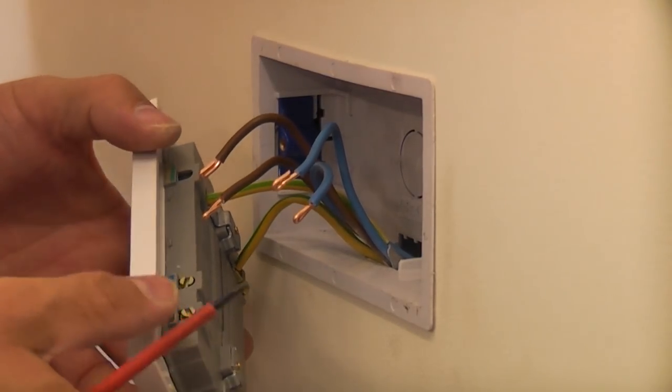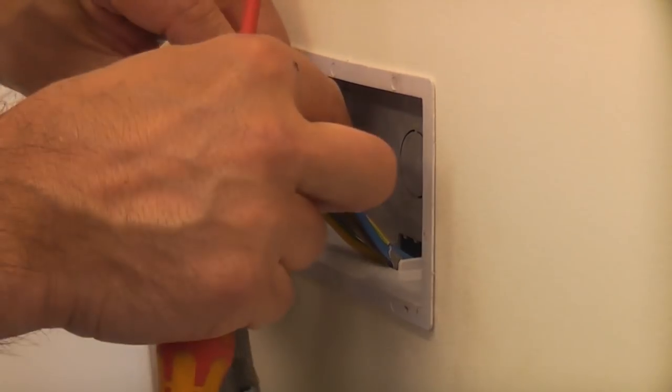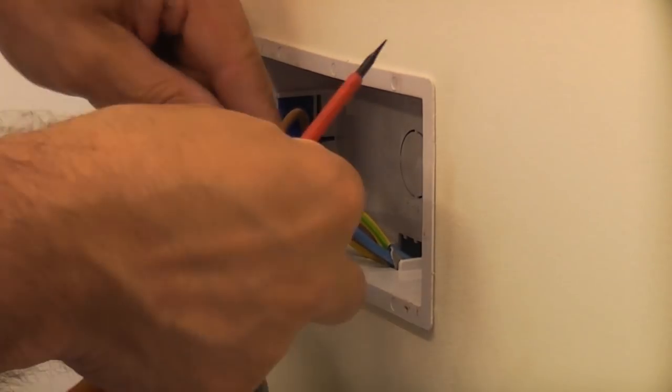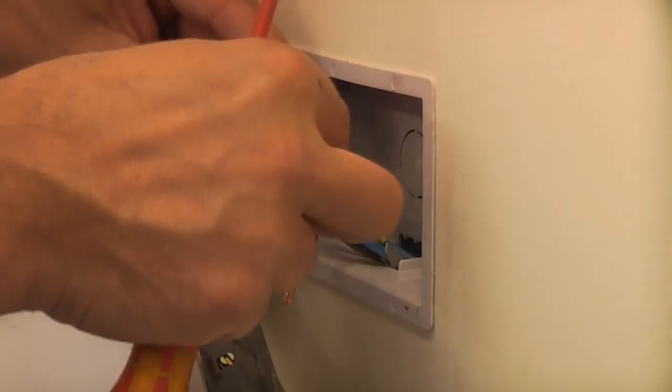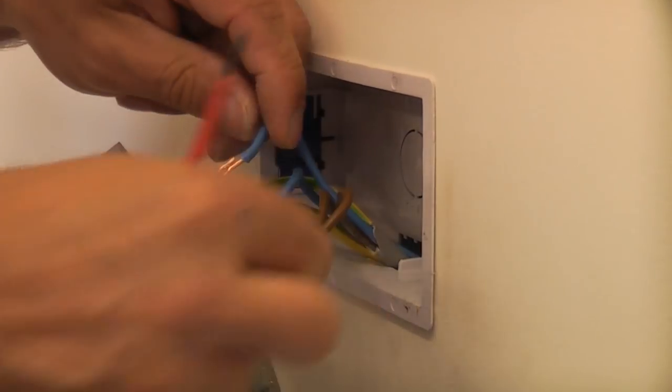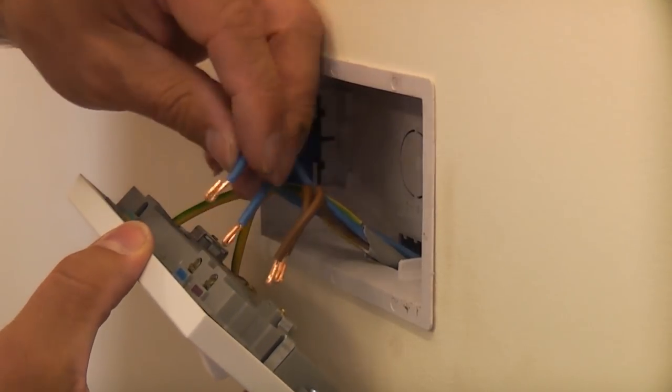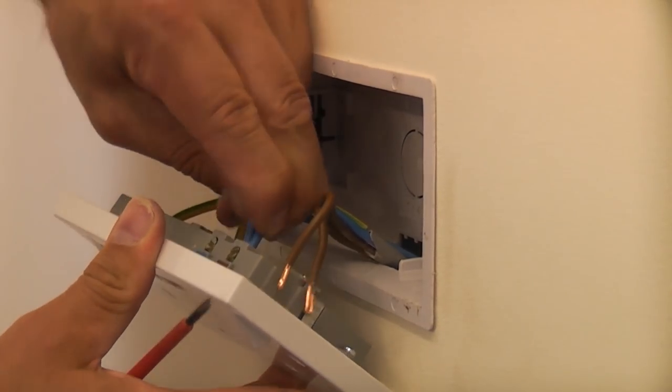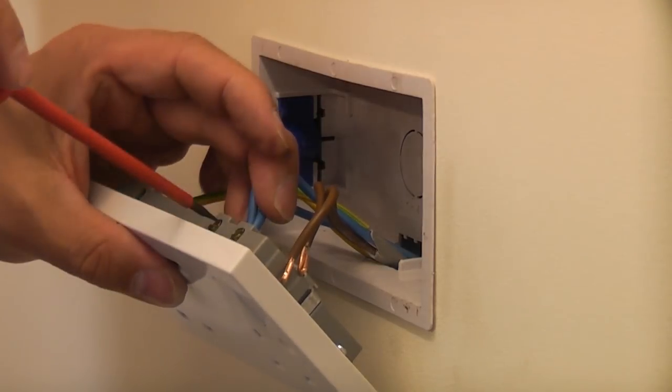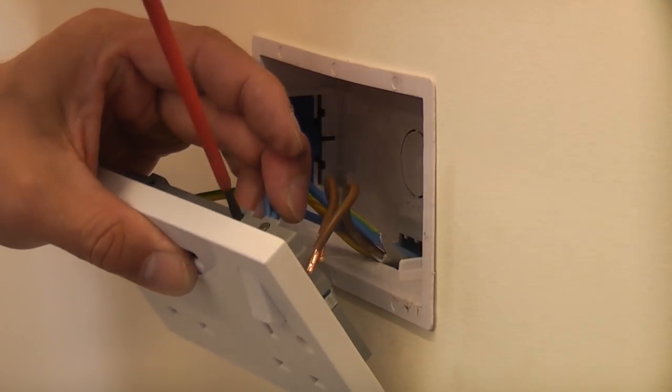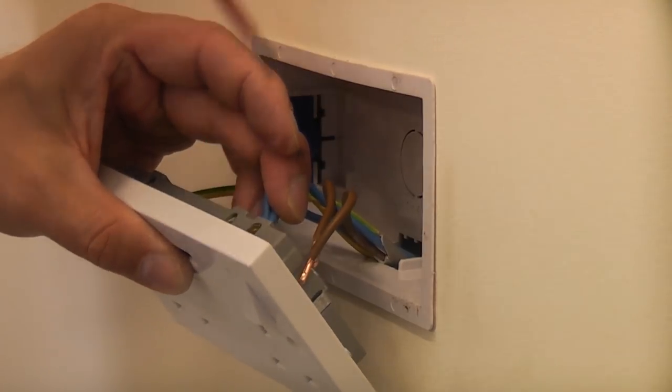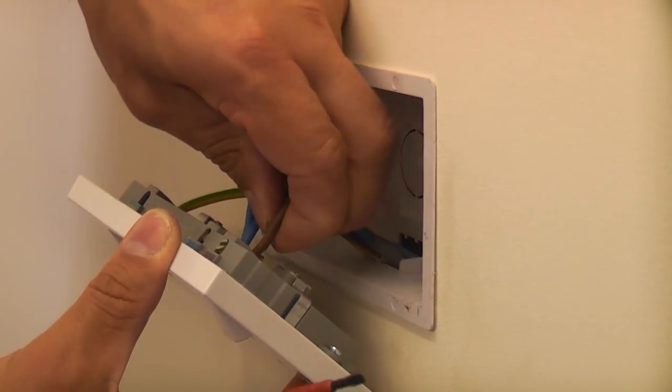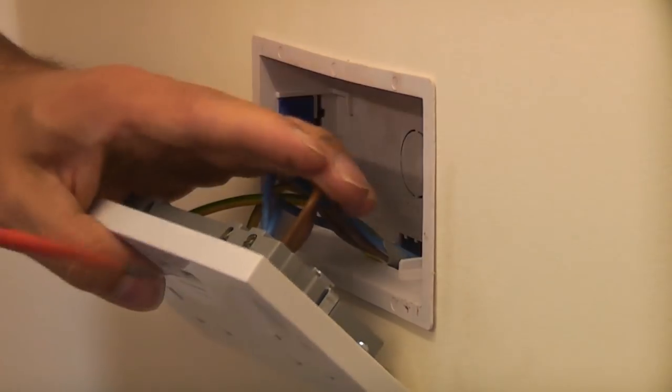Now we've done that, we just need to replace the two lives and the two neutrals. Sometimes you do have to bend and manipulate the wires a bit to get them in a bedded position. I can now get the two neutrals in and tighten that up.